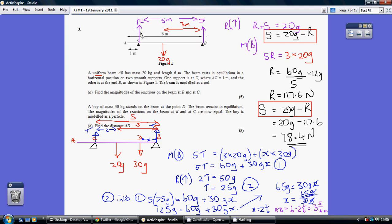So what do we know? We know the forces upwards, R plus S equal the downward force of 20G. So rearranging so I can use it in a simultaneous equation shortly, I've got S being 20G minus R. So that's my first equation.